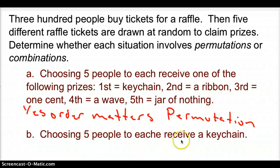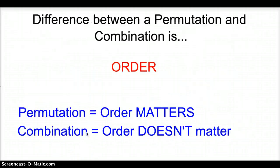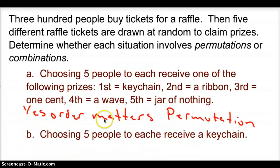Next, choosing five people to each receive a keychain. If I'm choosing five people to receive a keychain, does the order matter? Does it matter if I select Sally, then Bob, or Bob, then Sally? No, it doesn't. If we go back to our last slide, order doesn't matter. So, if order doesn't matter, this must be a combination.